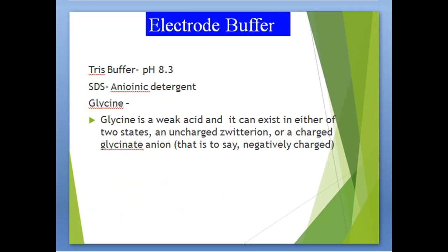The electrode buffer contains Tris buffer at pH 8.3, SDS as an anionic detergent, and glycine. Glycine is a weak acid and can exist in either of two states: an uncharged zwitterion or a charged glycinate ion.